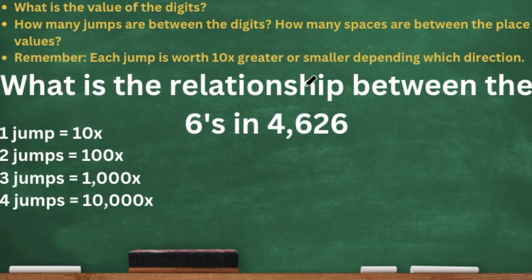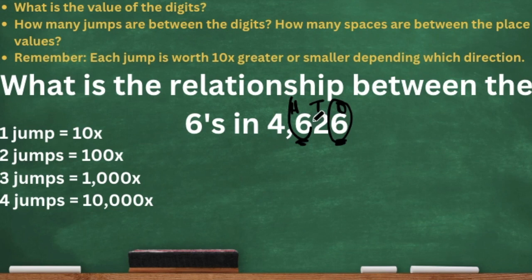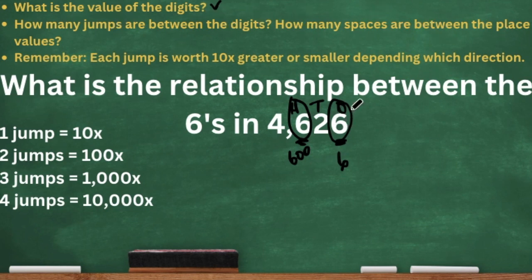Let's have a little bit more practice. What is the relationship between the sixes in 4,626? We have a six in the ones place, then the tens place, and then the six in the hundreds place. The value of the six in the ones place is six, and if I have six hundreds, the value is 600. So we're working with six and 600. How many jumps are between the digits? Going from the ones place to the hundreds place, I see there are two jumps. Two jumps is 100 times. Whether we go to the left or the right, it is 100 times.